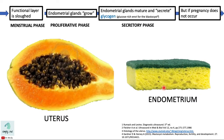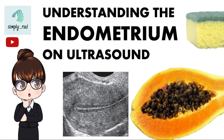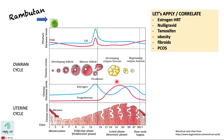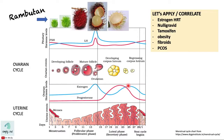Now we understand the appearance of the endometrium which follows changes in the menstrual cycle. Therefore, it is important to ask for the last menstrual period before scanning. This gives you the basis to say whether the appearance you see is appropriate for the phase of the menstrual cycle. We can also use this understanding of ultrasound appearances during the menstrual phases to interpret the related diagrams seen in medical school. Thank you.